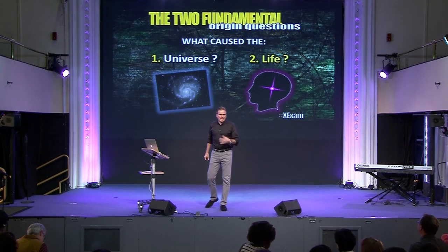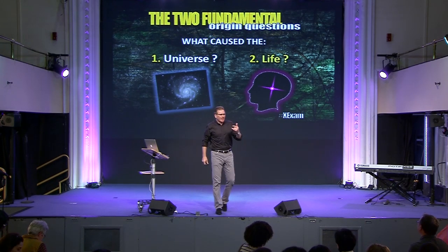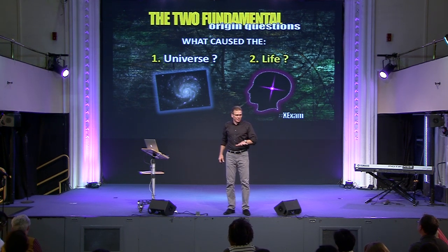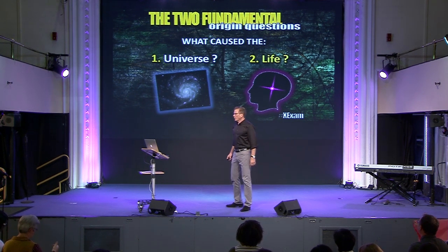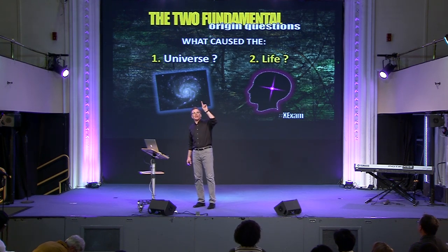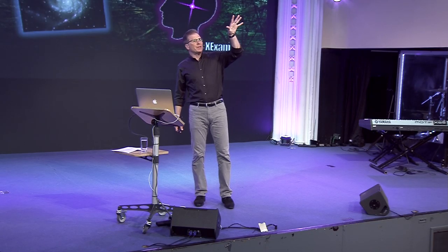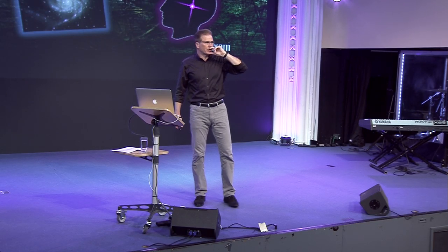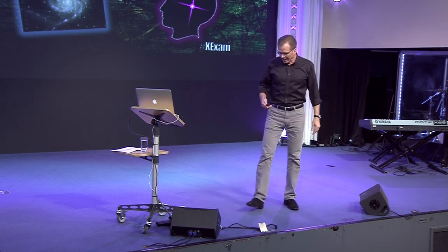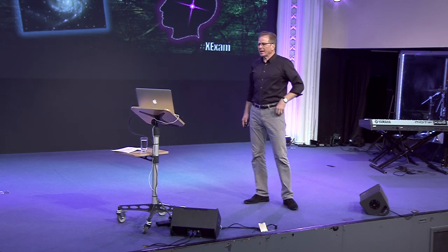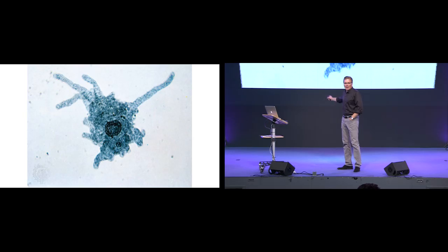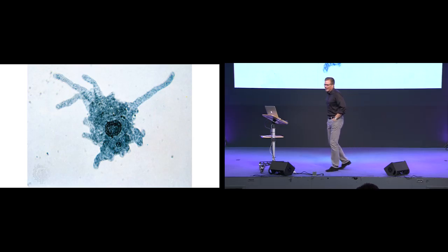We know that the universe had a beginning, and it appears designed. What about life? When you look through a telescope, you can see the universe is designed, but when you look into a microscope, you can see life is designed. This is apparently, according to evolutionists, where we all came from — a one-celled amoeba.